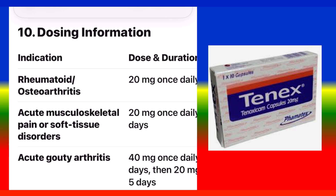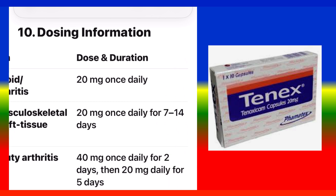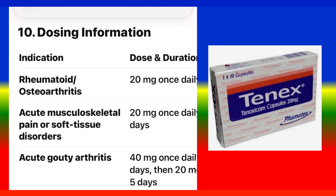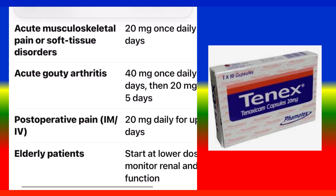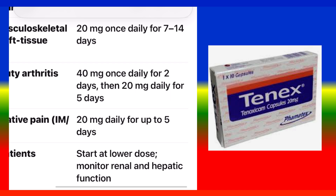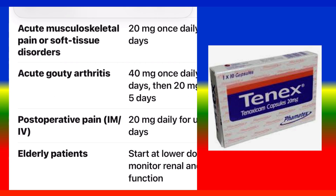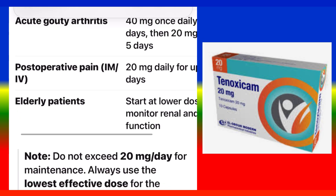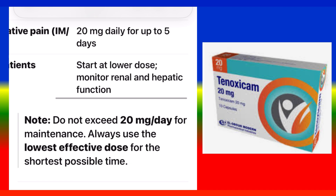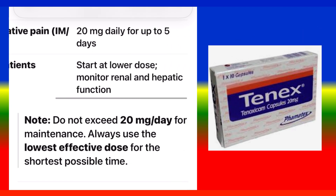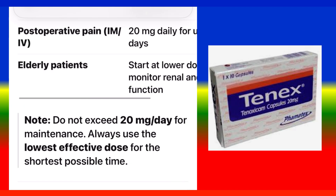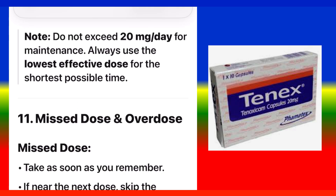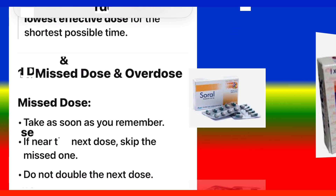Dosing Information: Rheumatoid arthritis and osteoarthritis — 20 mg once daily. Acute musculoskeletal pain or soft tissue disorders — 20 mg once daily for 7 to 14 days. Acute gouty arthritis — 40 mg once daily for 2 days, then 20 mg daily for 5 days. Post-operative pain (IM/IV) — 20 mg daily for up to 5 days. Elderly patients: start at lower dose, monitor renal and hepatic function. Do not exceed 20 mg per day for maintenance. Always use the lowest effective dose for the shortest possible time.